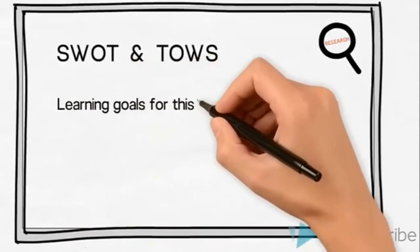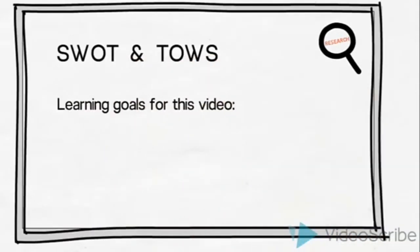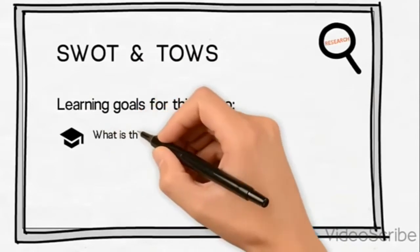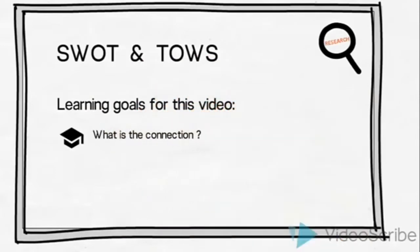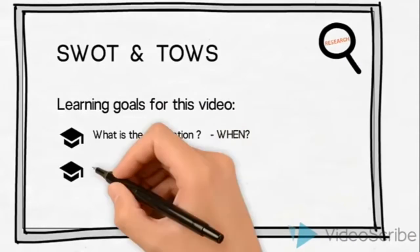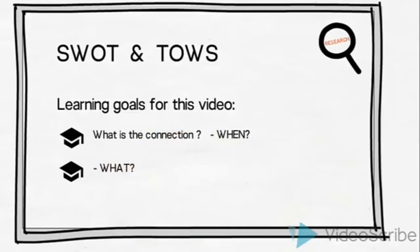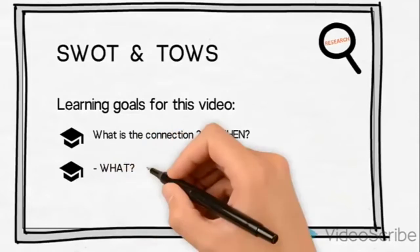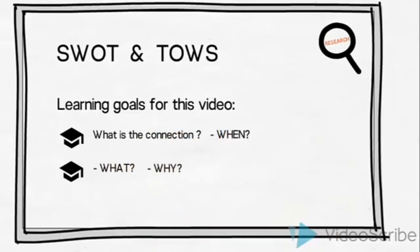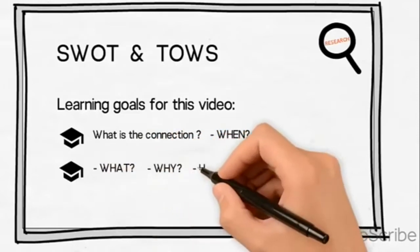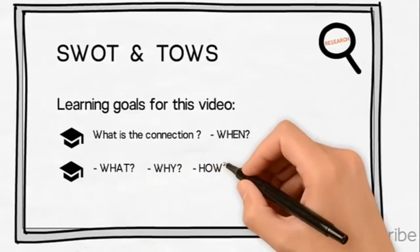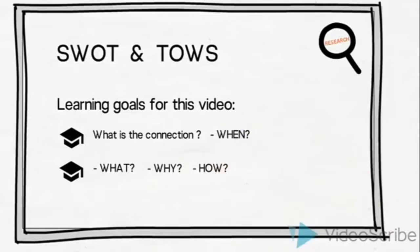Let us list the learning goals for this video. Firstly, the goal is to establish a connection and overview of when in the process the SWOT and the TAOS would be conducted. Secondly, the goal is to gain an understanding of what a SWOT and a TAOS is, why marketers use it, and how we could go about conducting a useful SWOT and TAOS.